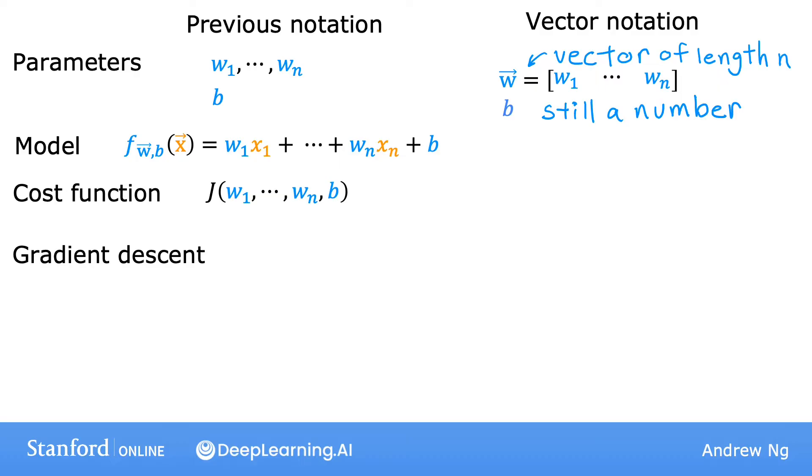Whereas before we had defined multiple linear regression like this, now using vector notation, we can write the model as f_wb of x equals the vector w dot product with the vector x plus b.